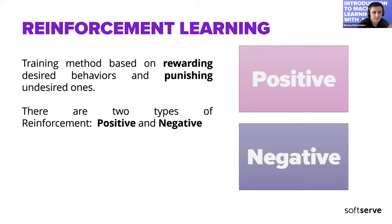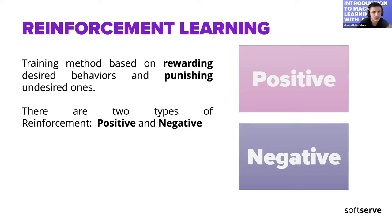The third type is reinforcement learning. This training method is based on rewarding desired behaviors and punishing undesired ones. There are two types: positive and negative. Positive reinforcement means rewarding desired behavior to encourage its repetition — giving something positive such as a reward when the agent performs well or achieves a desired outcome. Negative reinforcement means avoiding or removing something negative to encourage desired behavior — an agent receives negative reinforcement when it takes actions that lead to unfavorable outcomes or penalties.